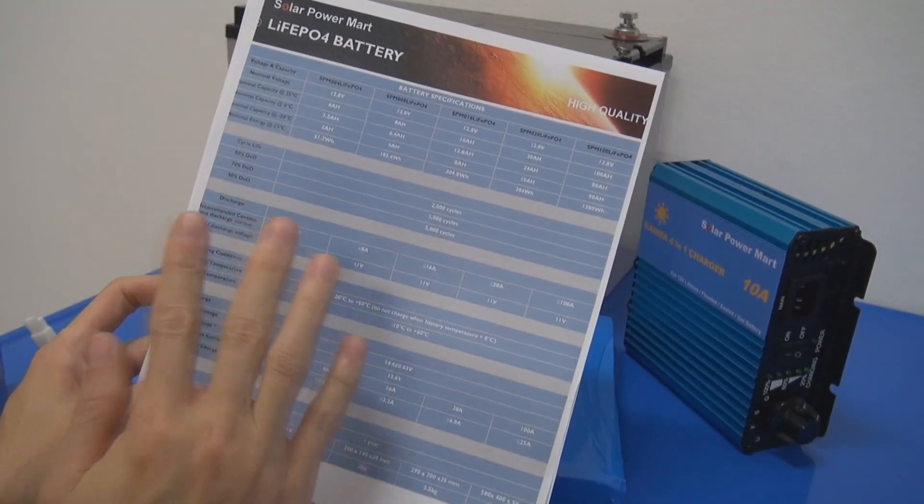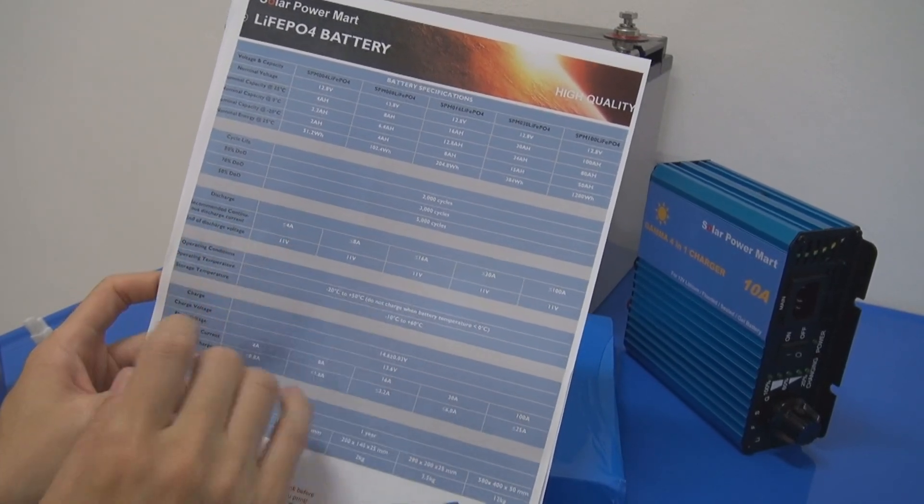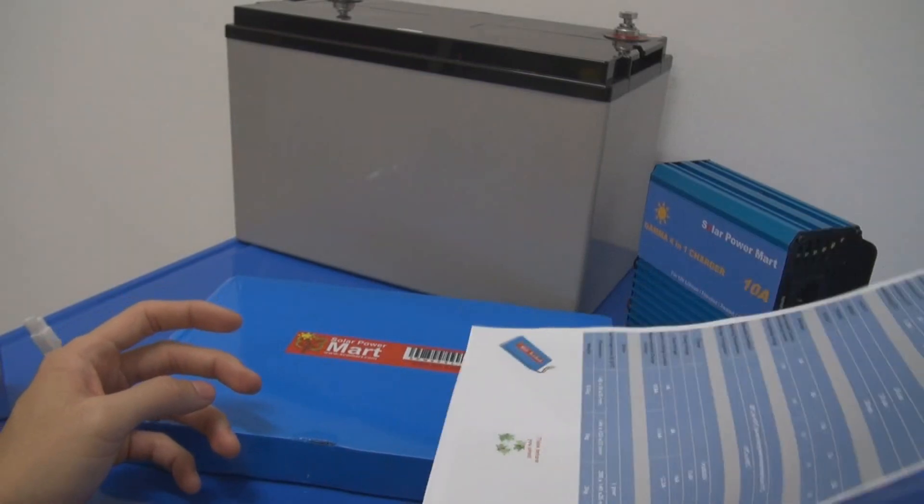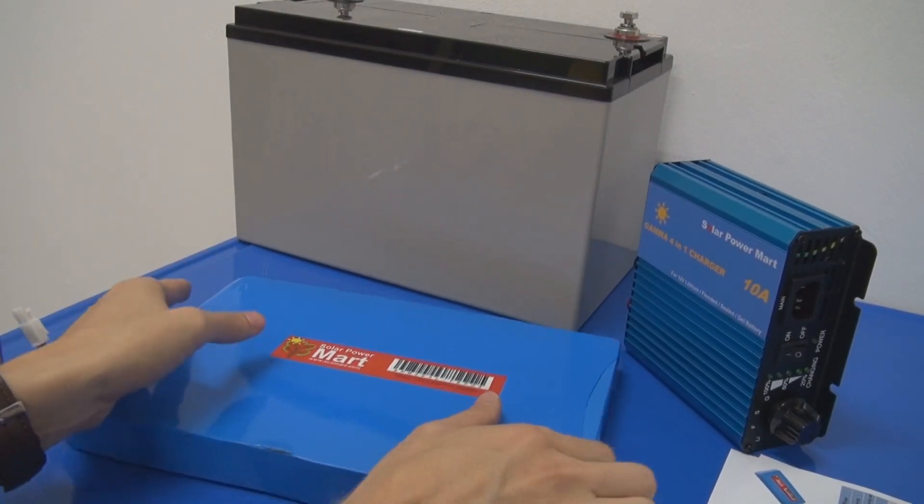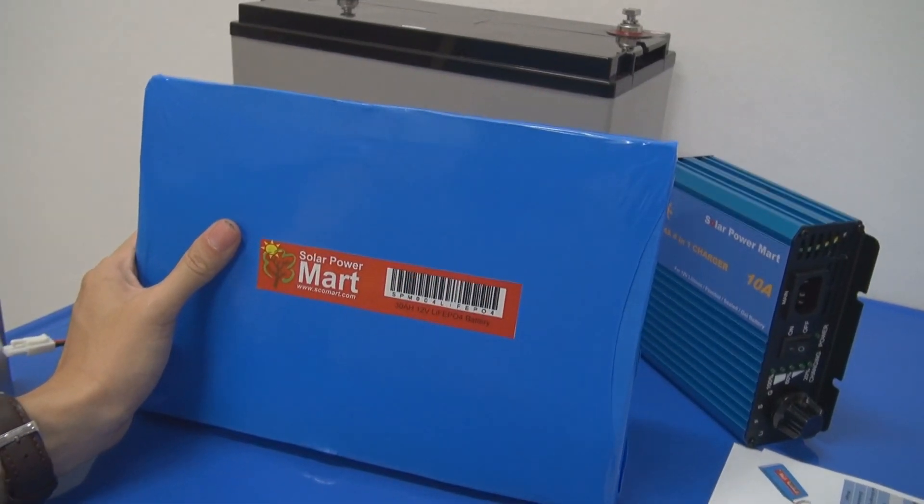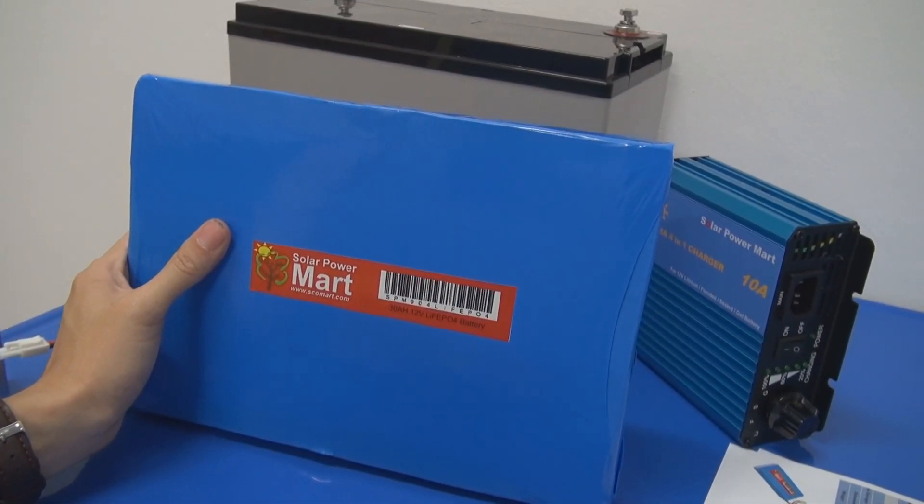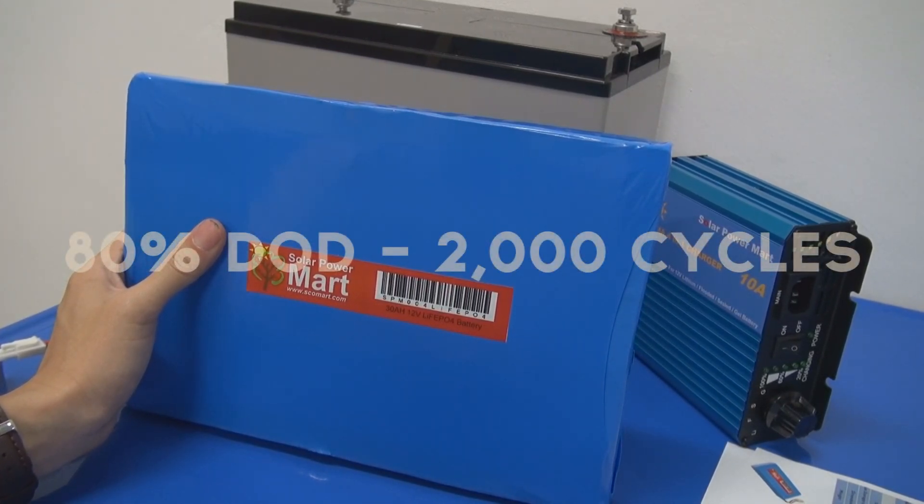You can read about the datasheet on the battery and the performance. Basically for a lithium battery, the cycle life is actually very good. Normally, let's say you do a DoD of 80% discharge, like I mentioned in part one, you will get roughly about 2,000 cycles.